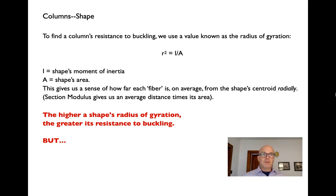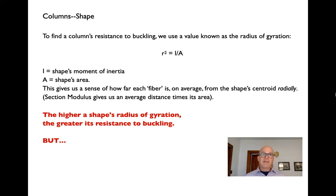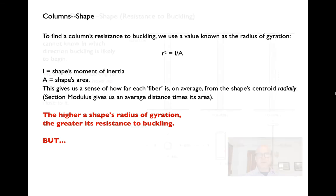Comparing radius of gyration with section modulus: in section modulus, we're finding a similar figure but multiplying by the quantity of area to come up with a resistant moment. The radius R is just a geometric property. It doesn't tell us directly about the column's strength against bending or buckling, but it tells us how to assess the column's width, which helps with its resistance to buckling. The greater the proportion of width to length, the stronger the shape is going to be.